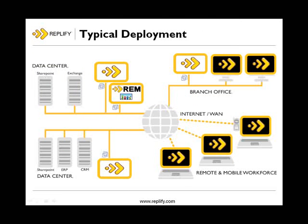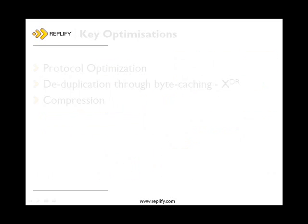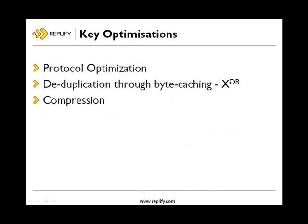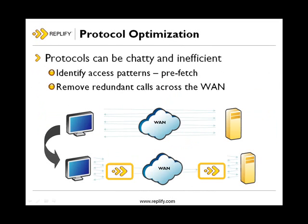Let's look at what these VAs and clients are doing. Three complementary optimization techniques are in action: protocol optimization, deduplication, and compression. Firstly, protocol optimization. We understand the underlying protocols transferring data across the wire, and so we can eliminate the chattiness, prefetch data, and remove redundant calls across the WAN.